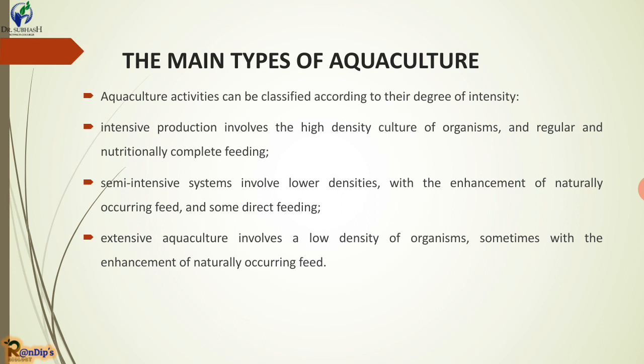The main types of aquaculture activity can be classified according to the degree of intensity. Intensive production involves the high density culture of organisms with regular and complete nutritional feeding.